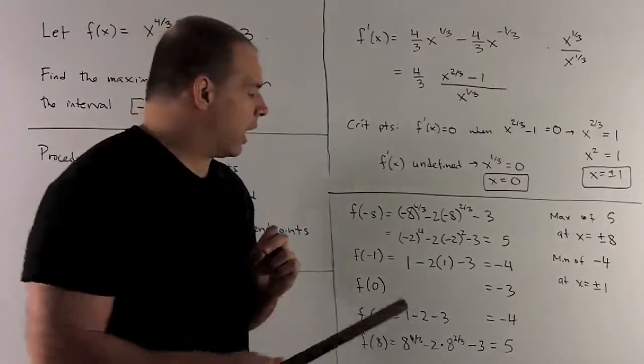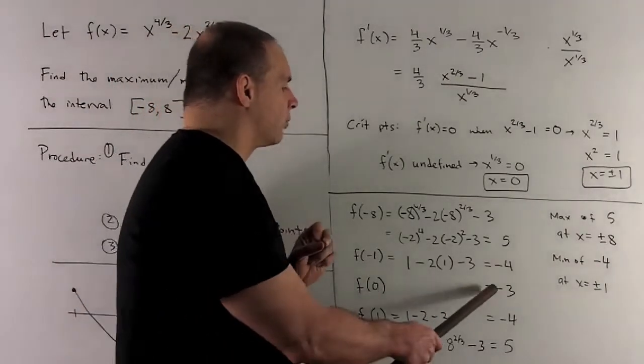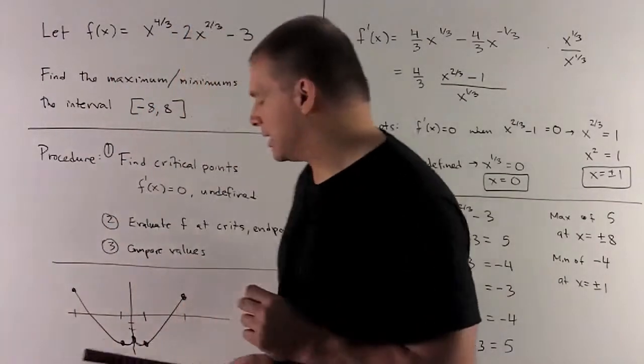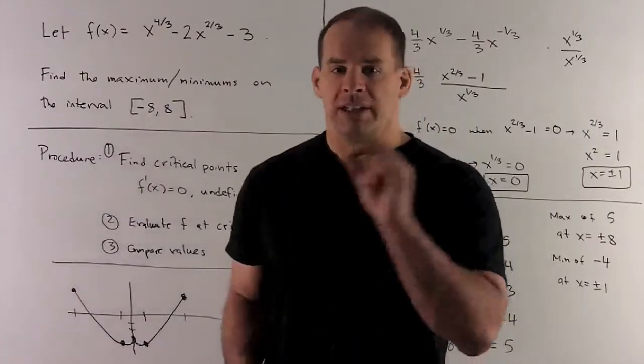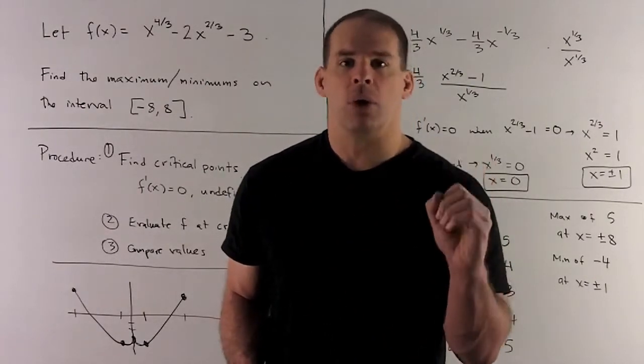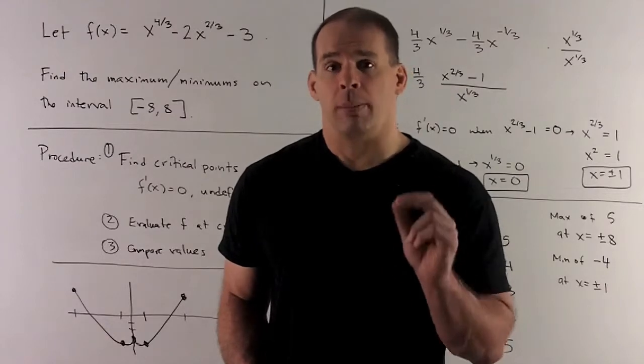How about the point we're not using? Well, that's going to be f(0) = -3. You'll note it's neither a maximum or minimum for the entire function on this region. But if we looked at it up close, it's going to be a local maximum.